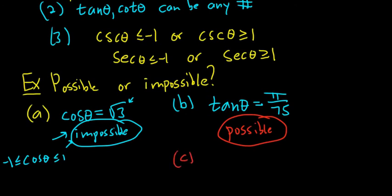And one more. Sine of theta equal to .002. Well, this is possible because this is a number between negative 1 and 1, and we know that the sine of theta is between negative 1 and 1. So this would be possible.